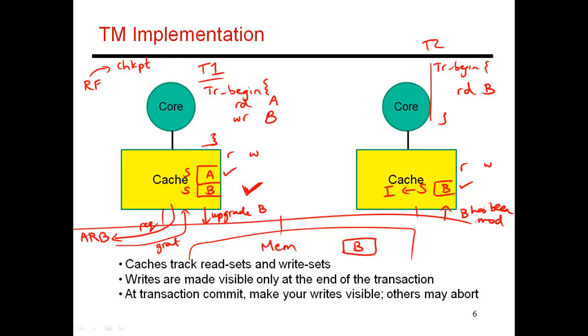This is my signal to abort. If you receive an invalidation for a cache line that has either been read or written within this transaction, then you have to abort and restart. In this case this transaction realizes that it has to abort and it goes back.